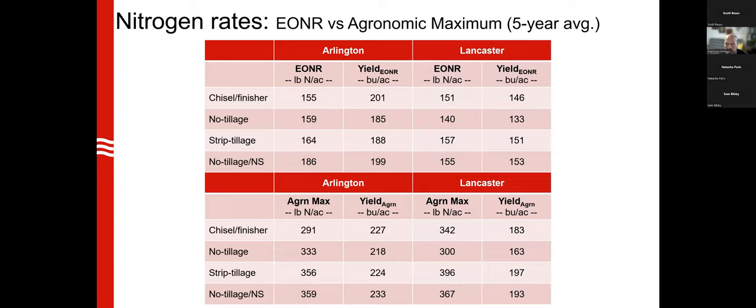At the Lancaster site we saw a similar scenario, though things shifted a bit — strip-till was among the highest yielding along with no-till without stover. EONR rates were roughly on par with Arlington but generally a little lower. Again, when we look at the agronomic maximum, additional nitrogen gets you very little bang for the buck.